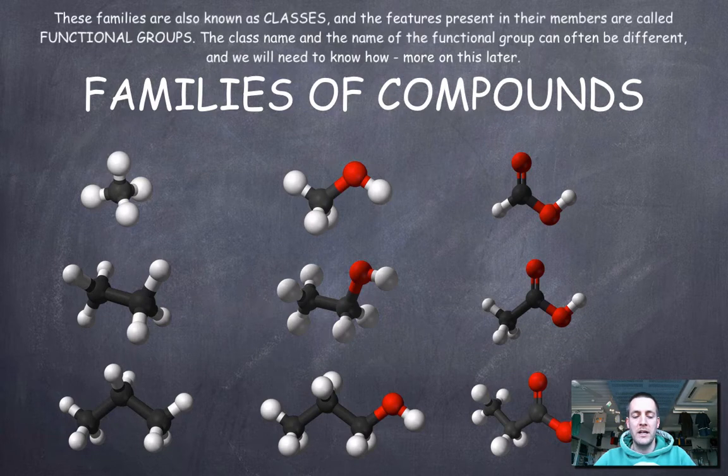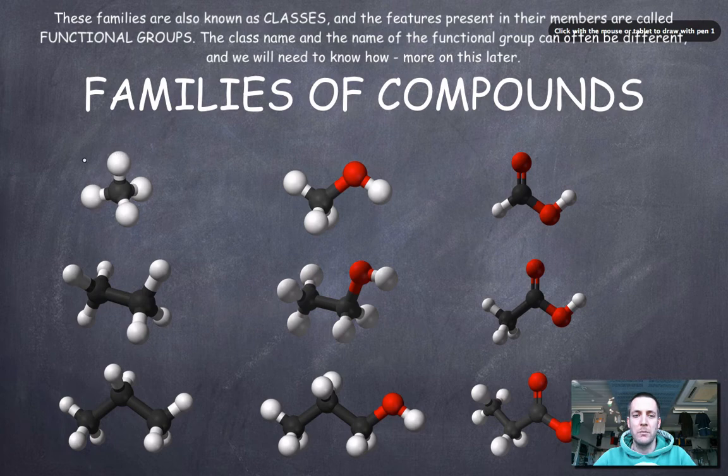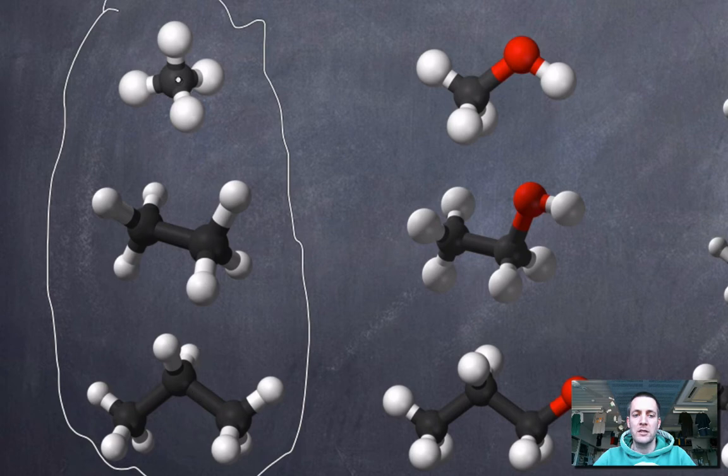And what I've done here in kind of three columns is just shown you a few space-fill diagrams of some different families of organic compounds. And here on the left, we can see three compounds that are all made of just carbon, the black balls, and hydrogen atoms, they're the whites. And what you can see is that we've got one carbon in this molecule, two in that one, and three in that one.